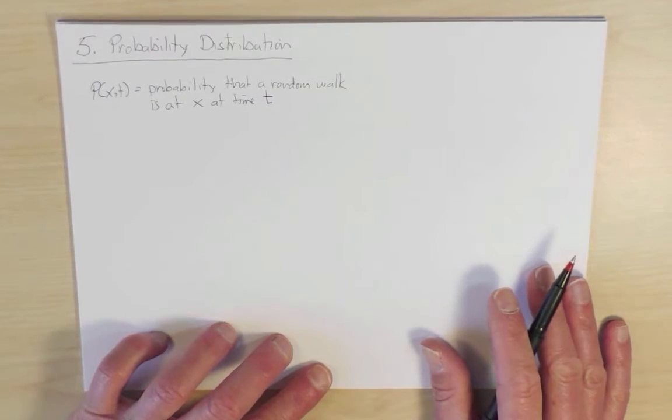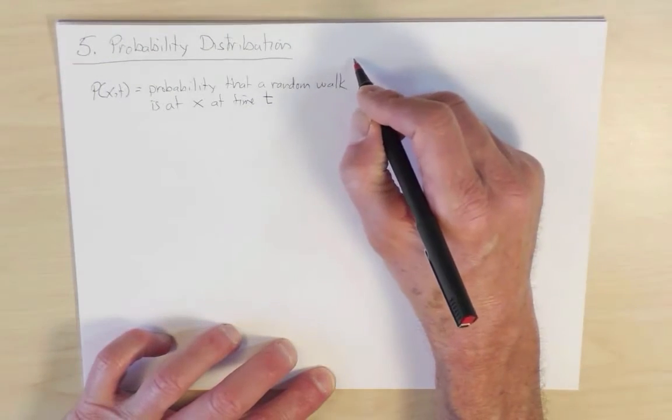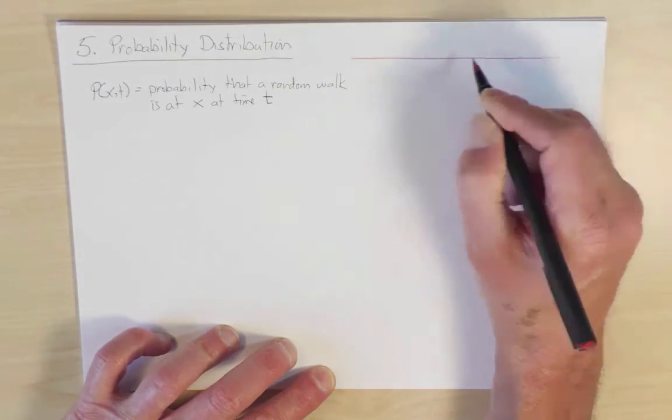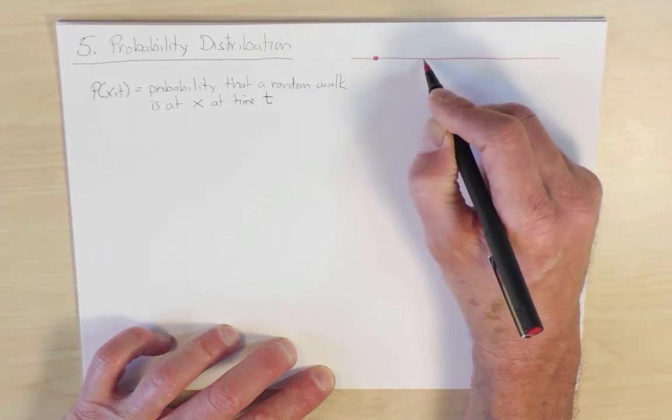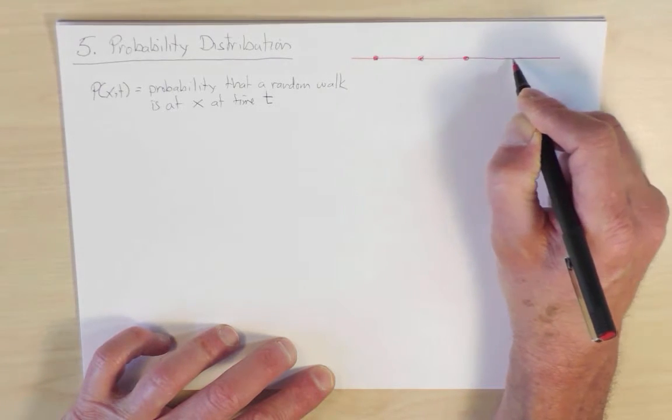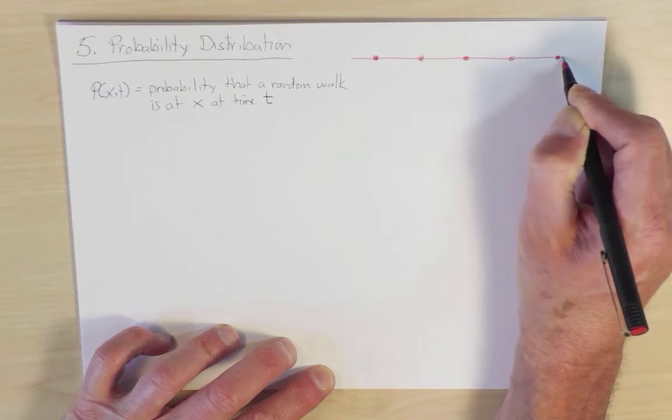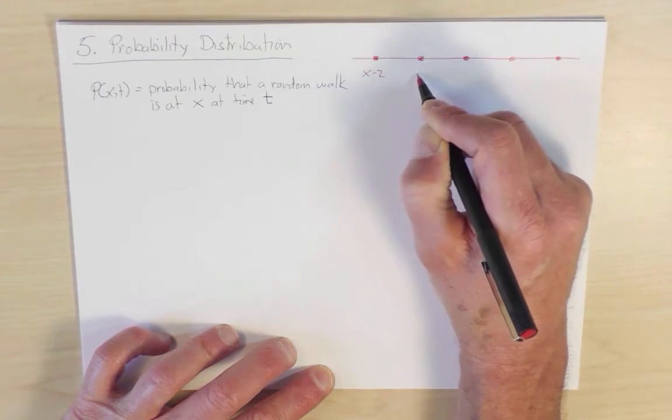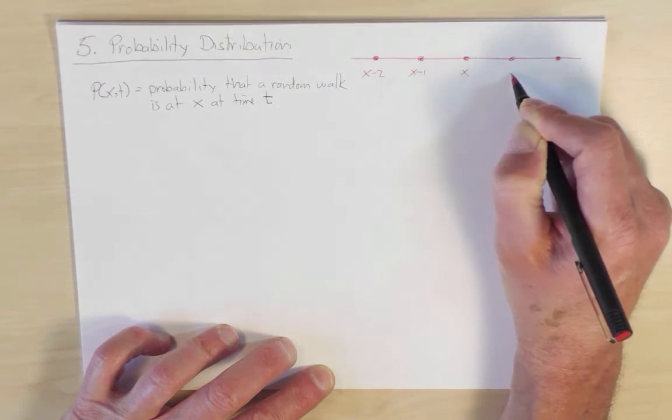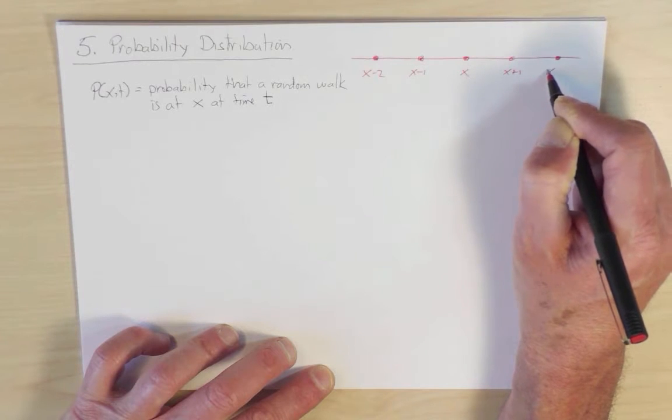So let's imagine a random walk that lives in one dimension with discrete sites like this. And so here is position x minus two, x minus one, x, x plus one, x plus two.